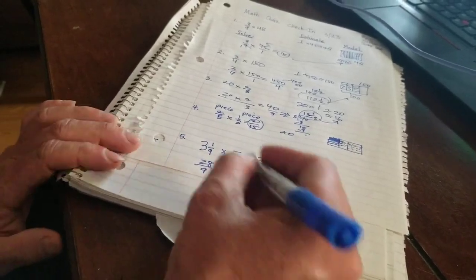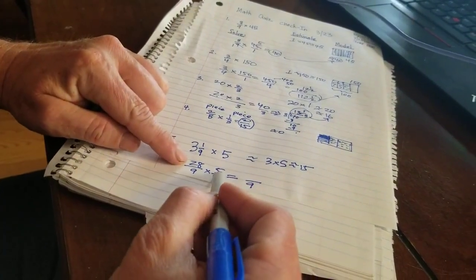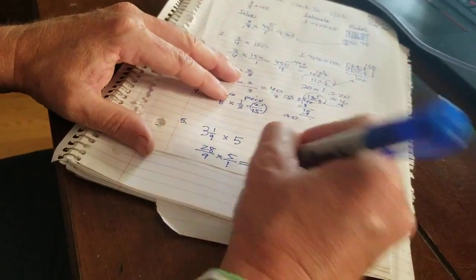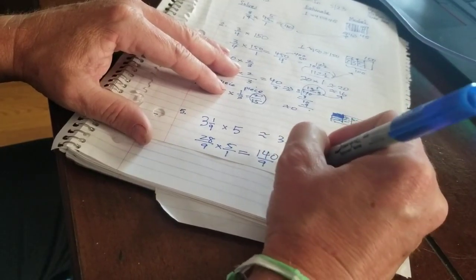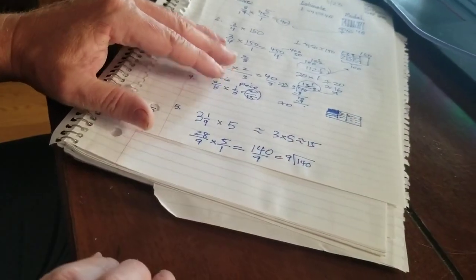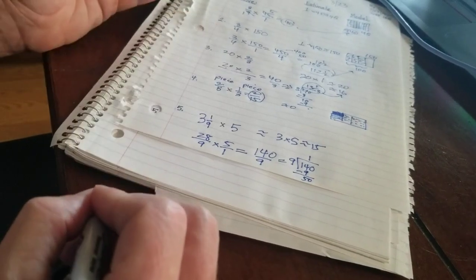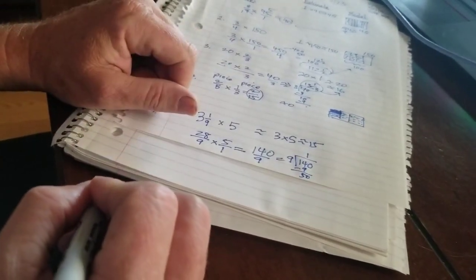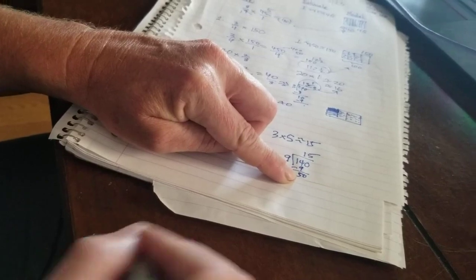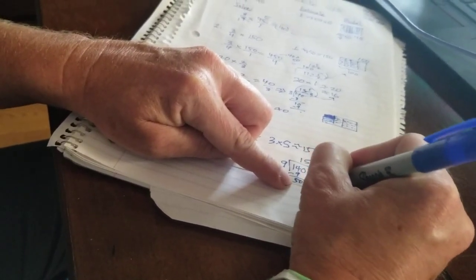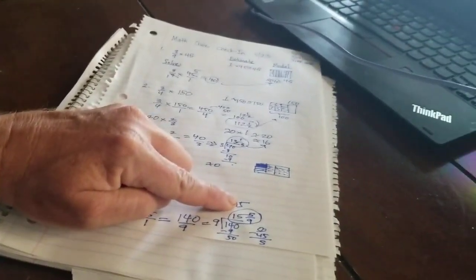That feels hard, but guess what? Distributive property. 20 times 5 is 100, 8 times 5 is 40. So I got 140 on top, all divided by 9. I think that's going to come out to about 15. Let's check: 140 divided by 9. Going old school. 9 goes into 14 once, then into 50 five times. 5 times 9 is 45, and 50 minus 45 is a remainder of 5. So 15 5/9. Look at that, look how close I was to my estimate.